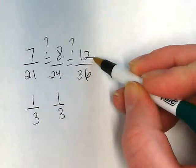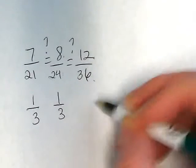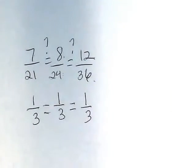Now I'm hoping I can get 12/36 down to 1/3. If I divide 12 by 12 and 36 by 12, I also get 1/3. So these are equivalent to each other.